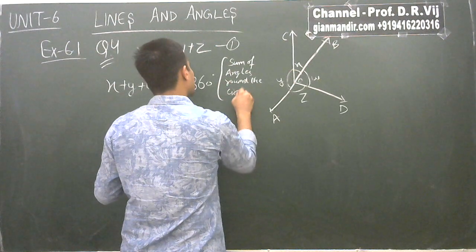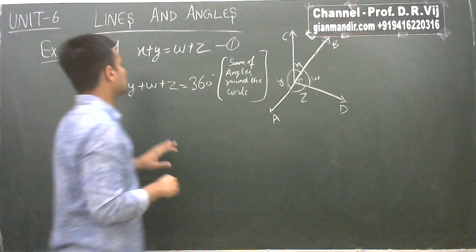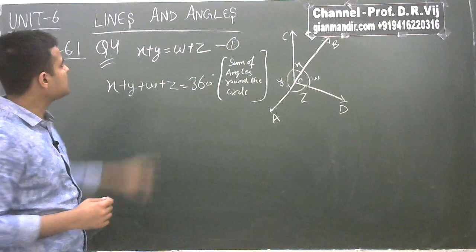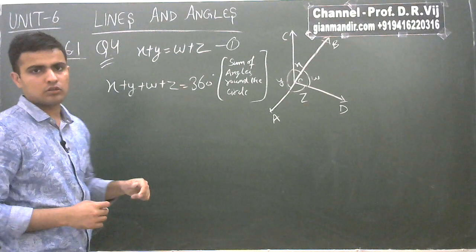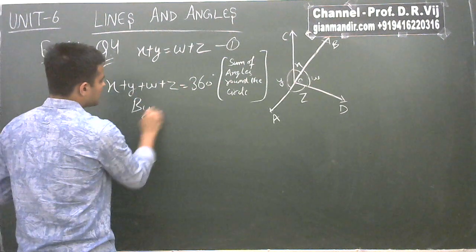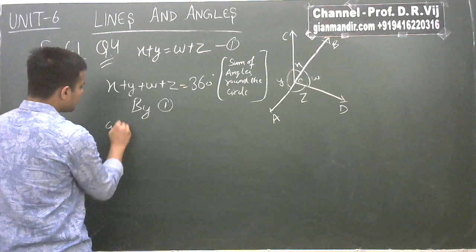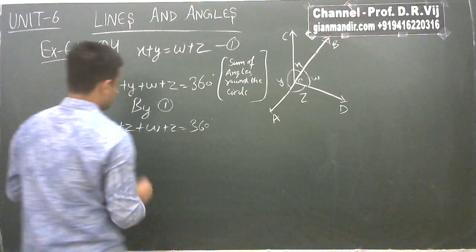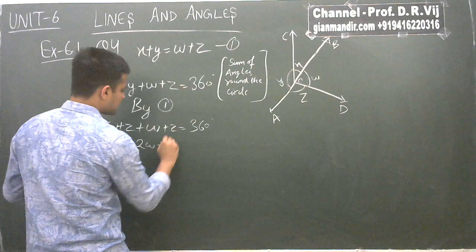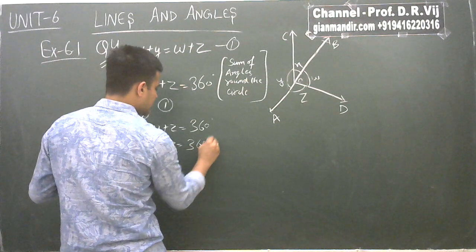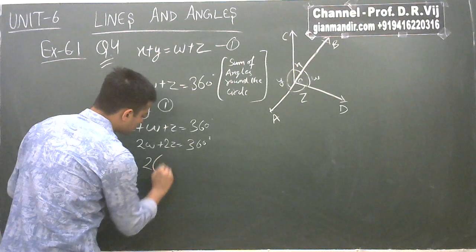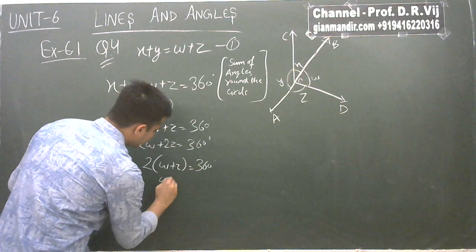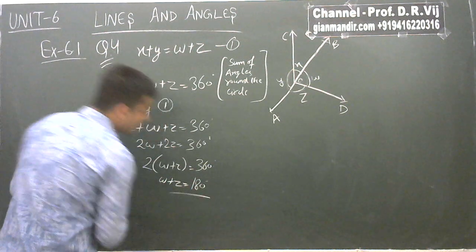By condition 1, X plus Y equals W plus Z. So we can replace X plus Y with W plus Z in the equation, giving W plus Z plus W plus Z equals 360 degrees. This becomes 2 times (W plus Z) equals 360 degrees, so W plus Z equals 180 degrees.